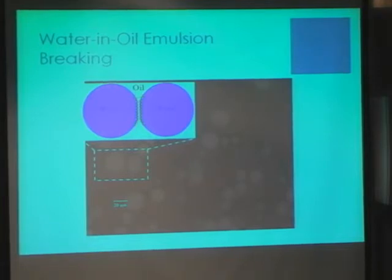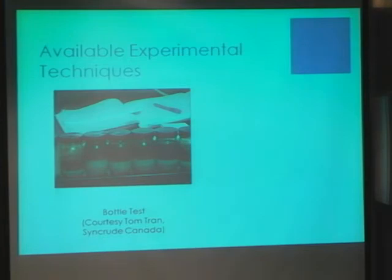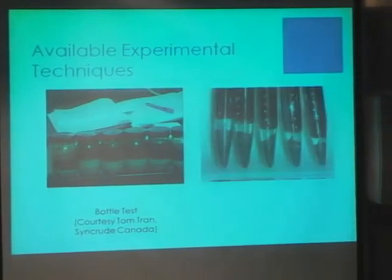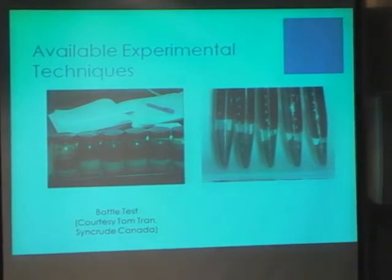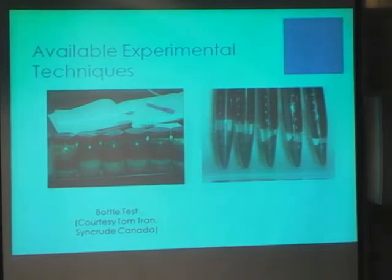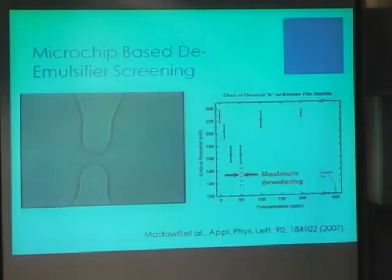The industry standard is the bottle test — you take bottle tests, or if you are impatient you throw the bottles into a centrifuge and do it quicker. You get phase separation experiments that tell you how much water you have dewatered. But can you tell me convincingly that you have coalesced the water versus flocculated it and gotten a rag layer?